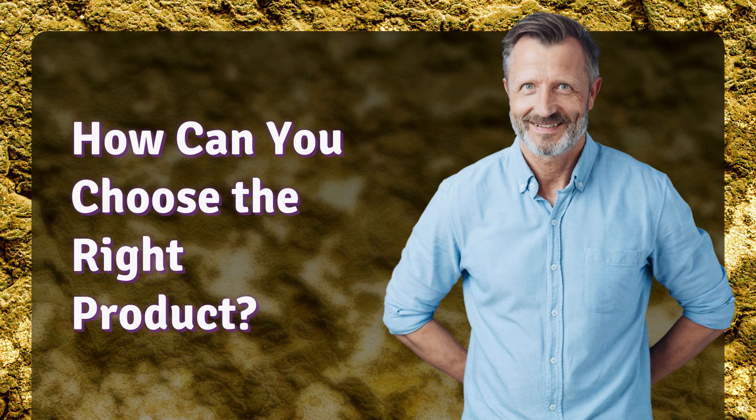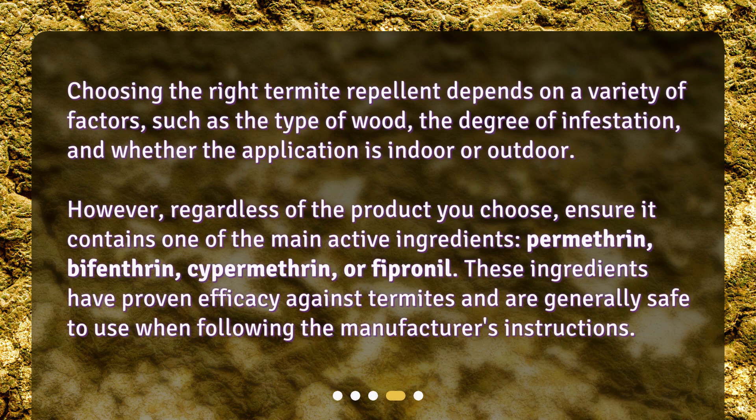How can you choose the right product? Choosing the right termite repellent depends on a variety of factors, such as the type of wood, the degree of infestation, and whether the application is indoor or outdoor. However, regardless of the product you choose, ensure it contains one of the main active ingredients — permethrin, bifenthrin, cypermethrin, or fipronil. These ingredients have proven efficacy against termites and are generally safe to use when following the manufacturer's instructions.